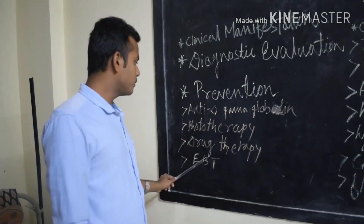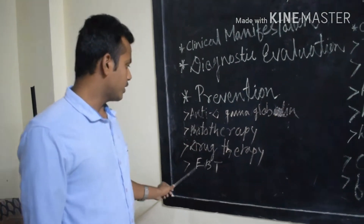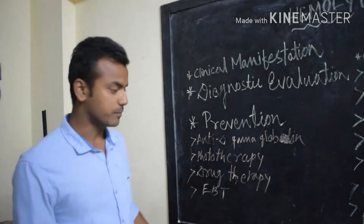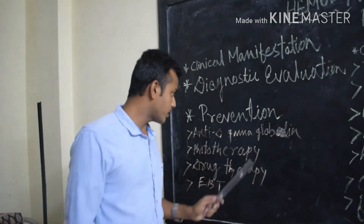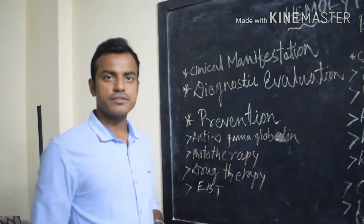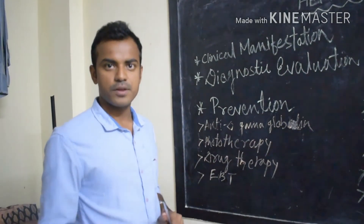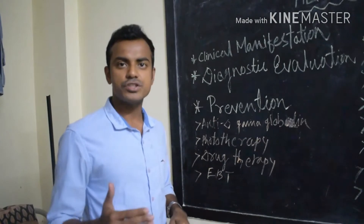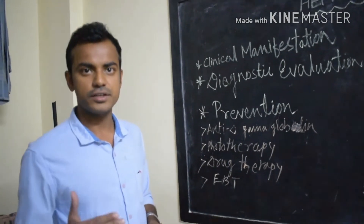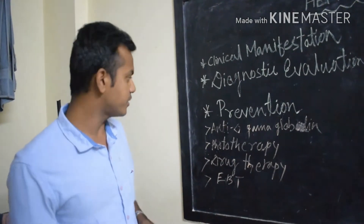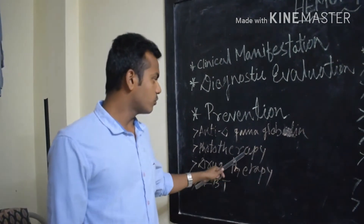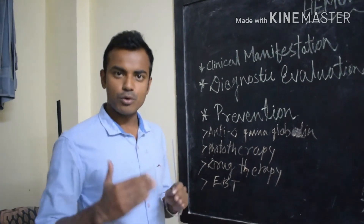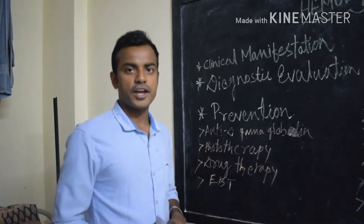The next prevention is to reduce bilirubin levels. To prevent elevated bilirubin, we use phototherapy, drug therapy, and EBT — exchange blood transfusion. In phototherapy, it is a non-invasive and easy method where fluorescent lights or LED lights are used to decrease the bilirubin level.